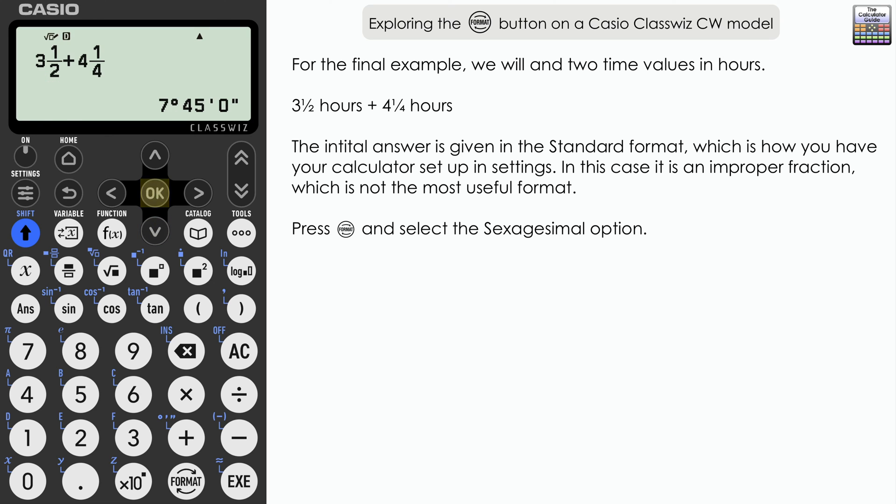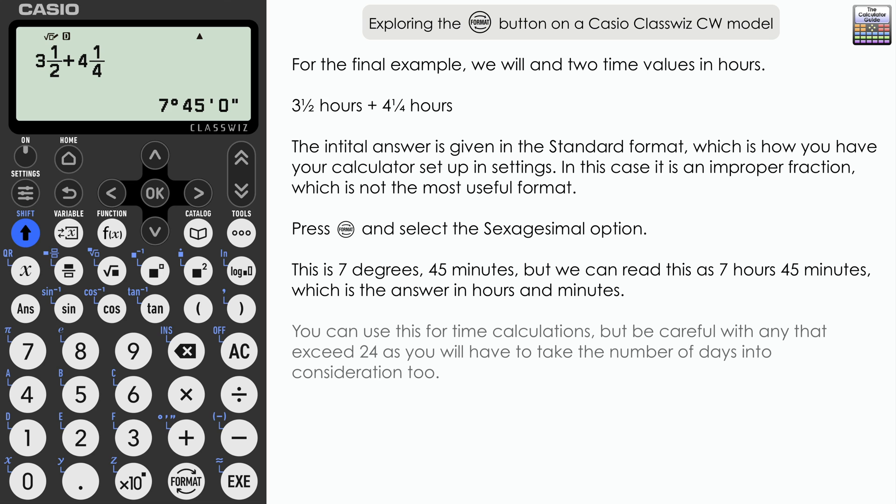Well, technically, this is seven degrees 45 minutes. But the best way to read that in terms of time is seven hours 45 minutes. So how much time is three and a half hours plus four and a quarter hours, it's seven hours 45 minutes. And if you wanted that as a fraction, you could go to the mixed fraction if you wanted to seven and three quarter hours if you wanted to do that.